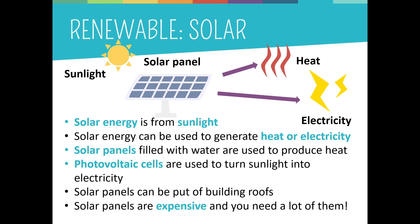Solar thermal panels are filled with water which heats up in the sunlight. The heated water is then pumped through a tank, heating the water connected to the taps in the house. Solar panels called photovoltaic cells are used to turn sunlight directly into electricity. Photovoltaic cells are made from the chemical element silicon — when silicon is exposed to lots of sunlight, it generates an electrical charge.